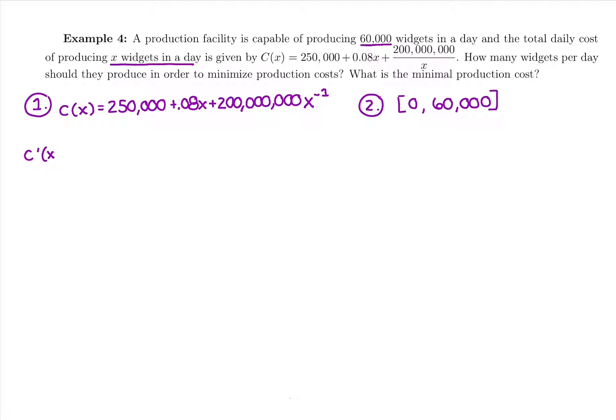Now that we have it rewritten, we're ready to take the derivative. Taking the derivative of 250,000 is zero because that's a constant. The derivative of 0.08x is just 0.08. And then bring down the power, subtract one for the new power. I'm going to have 200,000,000 times negative one, giving me negative 200,000,000. And then we have x to the new power, negative one minus one is negative two. We're setting this equal to zero.